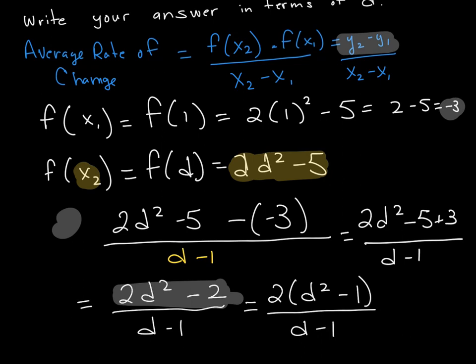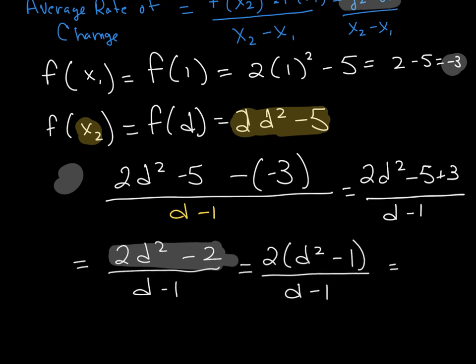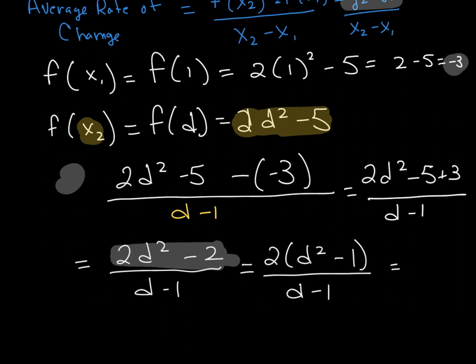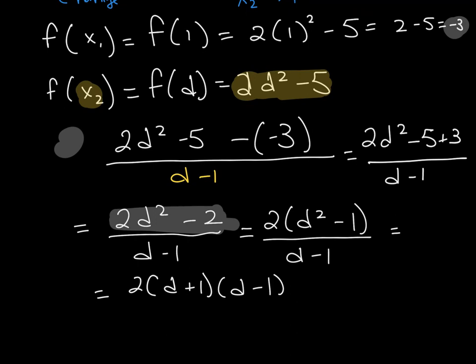Now, hopefully you recognize the fact that we're not done factoring yet. This is something special. This is d squared minus 1. This is called the difference of two squares, so I can factor that again. And when I factor that again, what I'm left with is 2 times d plus 1 times d minus 1. That's because this is the difference of two squares, so one is a plus and one is a minus. All of this is over d minus 1.